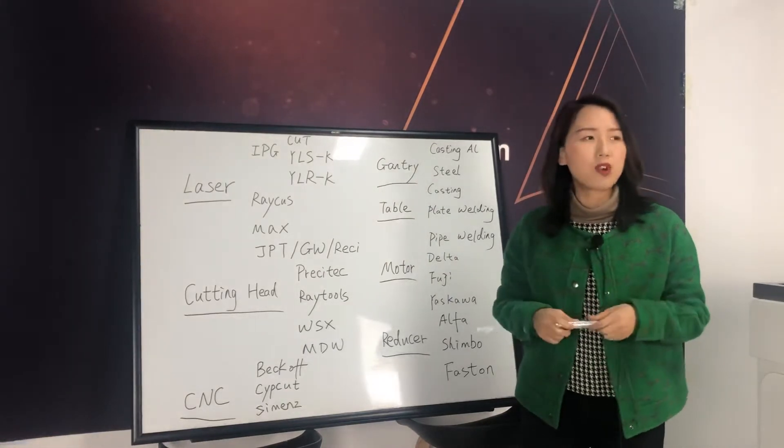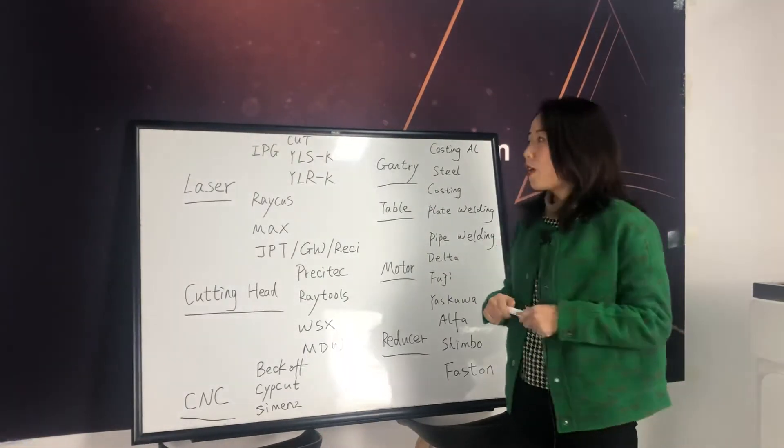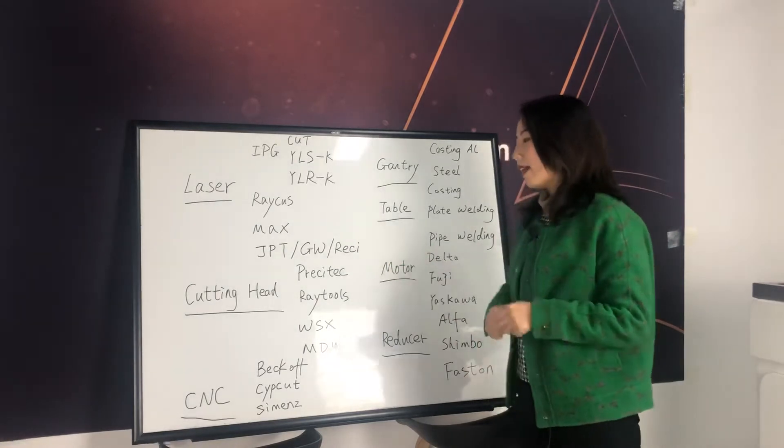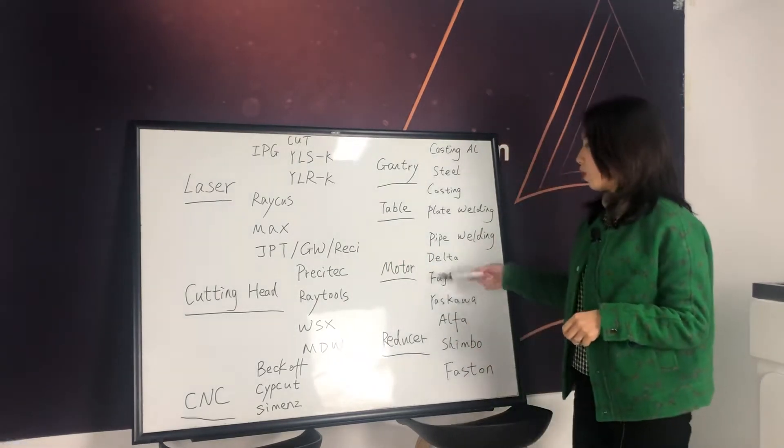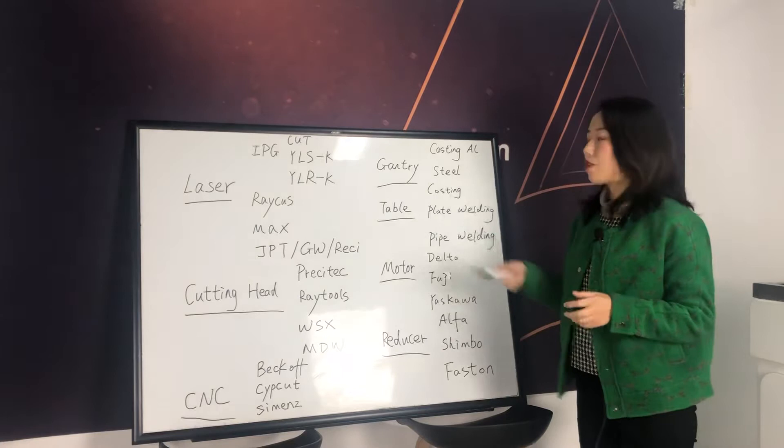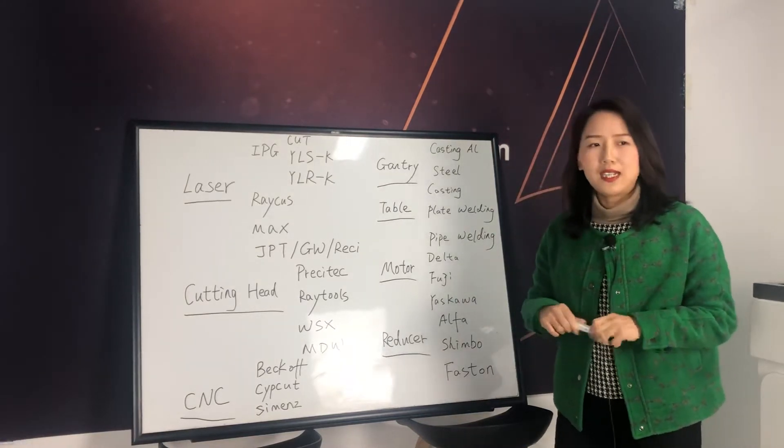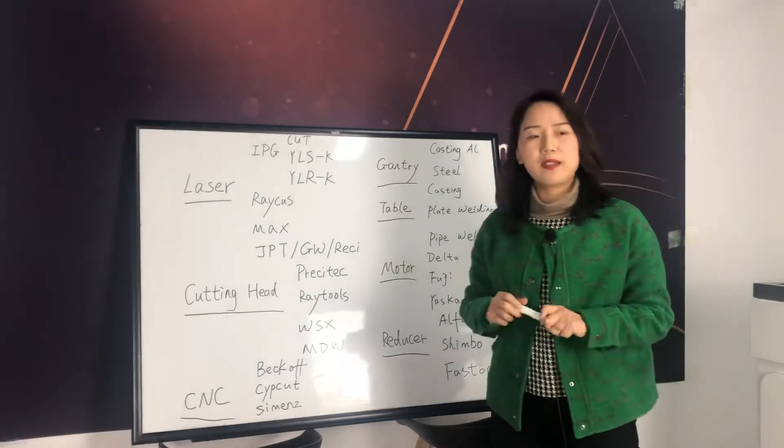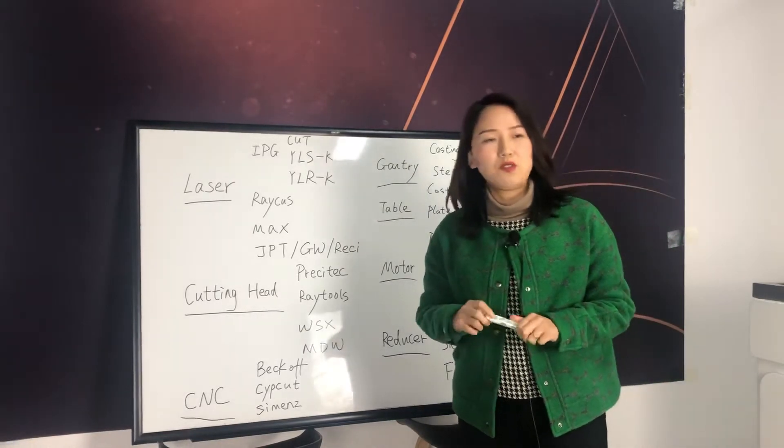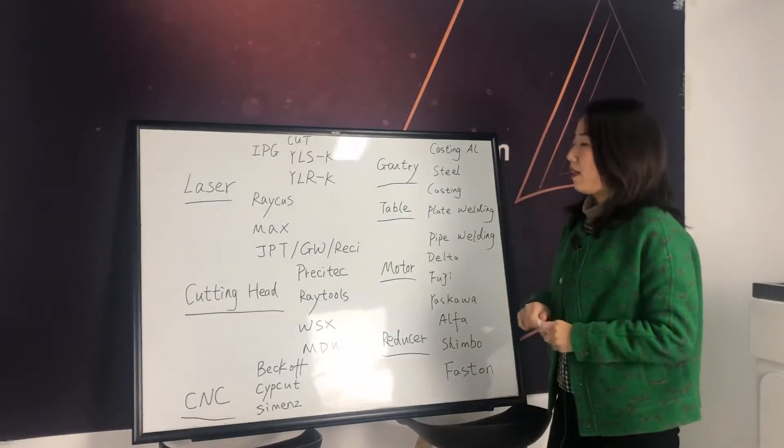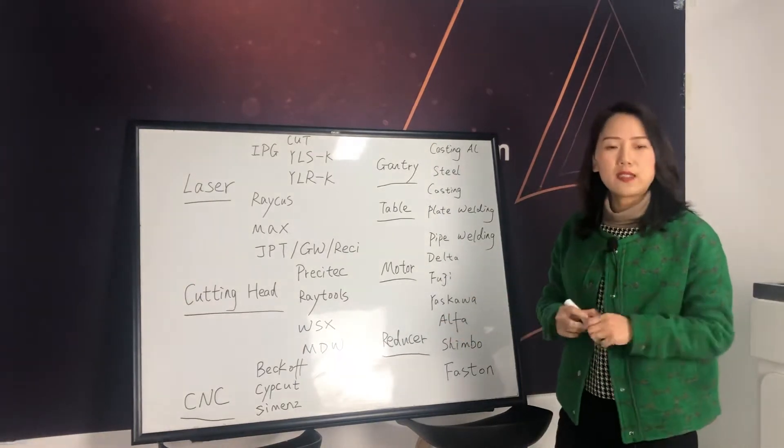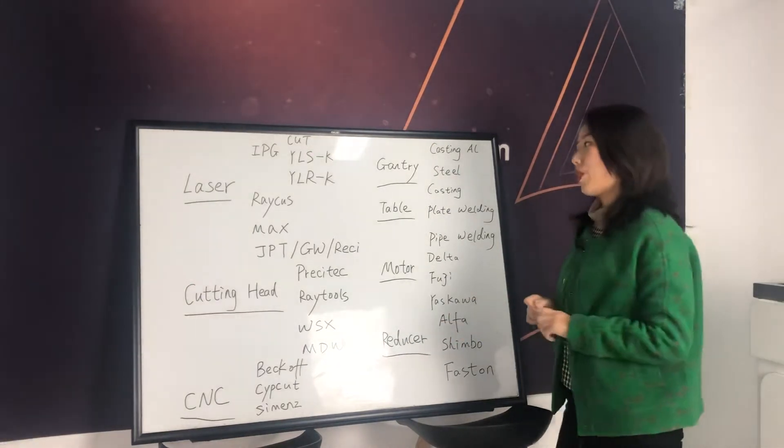We have Alibaba shop and AliExpress. So you can buy lasers, cutting head and control and motors, reducers, even gantry and table from our Ali shop. But does that mean that you can make a laser cutting machine yourself? Of course not. Everybody can buy all these parts in the market, but they make different laser machines.